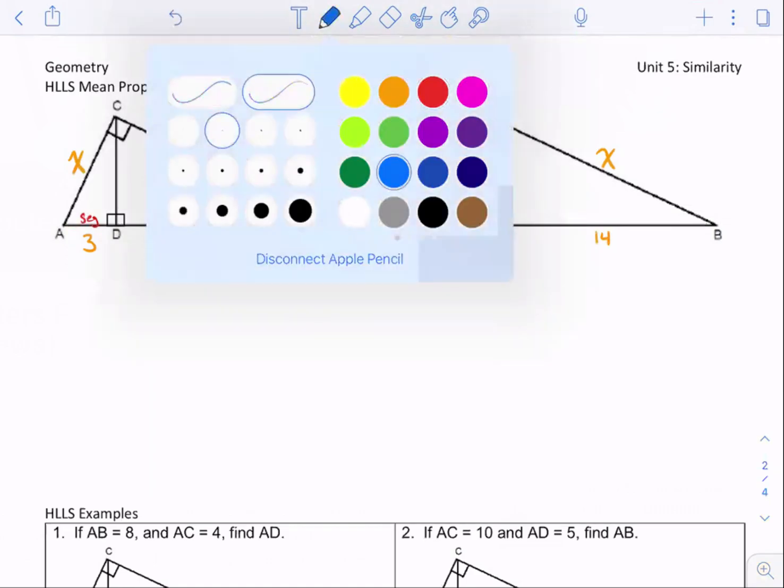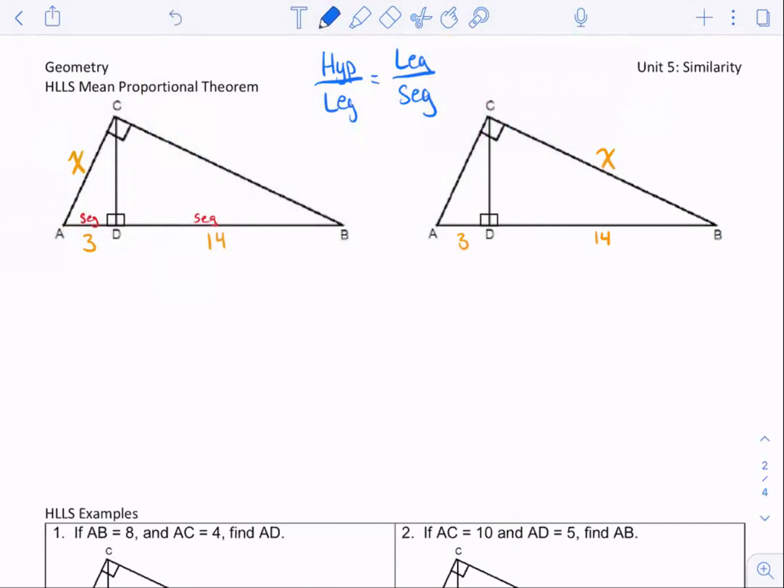It's going to be based on which leg is marked or labeled here. So now to use Hills correctly, hypotenuse over leg equals leg over segment. Now you need to know that this is always going to be the same value. That's why it's double L. And that value specifically comes from the leg of the hypotenuse, which in this case is x. So I could go in and fill in that this is x. Now what is the hypotenuse in this picture? What is that total length? 17.